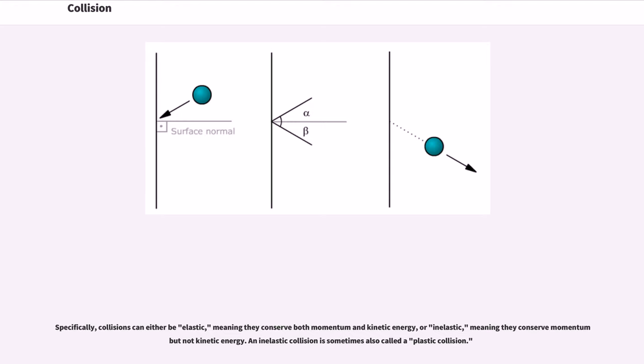An inelastic collision is sometimes also called a plastic collision. A perfectly inelastic collision is a limiting case of inelastic collision in which the two bodies stick together after impact.